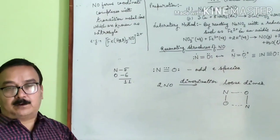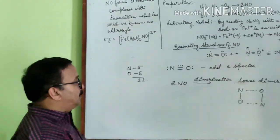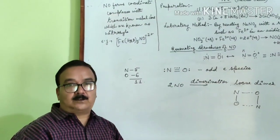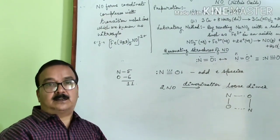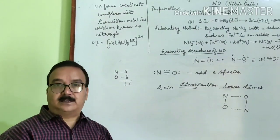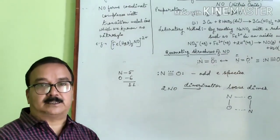Where number of unpaired electrons is zero. Therefore we can say that nitric oxide in the liquid or solid state is diamagnetic in nature, while in the gaseous state it is paramagnetic in nature.